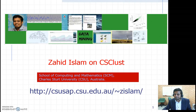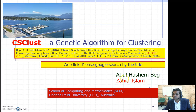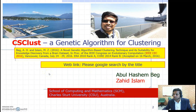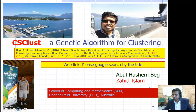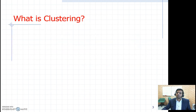This paper — the CS-Clust genetic algorithm based clustering technique — was published and presented at IEEE CEC 2016 in Vancouver. This is the complete reference of the paper. You will possibly find it online soon, as it was just presented last week. If you have any trouble downloading it, please email me and I will send you an author's copy.